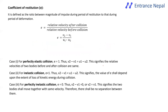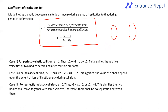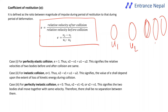For collisions, the coefficient of restitution (e) is defined as: e = relative velocity after collision / relative velocity before collision = (v₂ − v₁)/(u₁ − u₂).